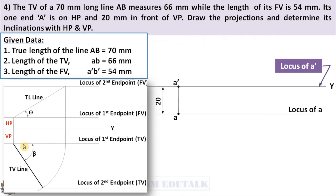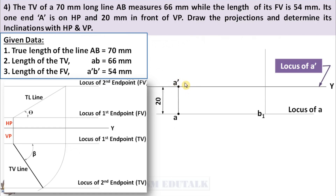After getting the top view at the first endpoint locus, then only it should be rotated to the second endpoint locus. So we can mark the top view length on the first endpoint locus below the XY line, that is locus of A. So mark the top view length 66 mm on locus of A. Its one end is already marked, that is point A, and the other end is point B1. The distance between A and B1 is nothing but top view length 66 mm. Now project point B1 vertically upward. Draw an arc with A dash as center and true length 70 mm as radius. It cuts this vertical projector at B1 dash. Join point A dash and point B1 dash by a thin line. This is the required true length line which got above the XY line.